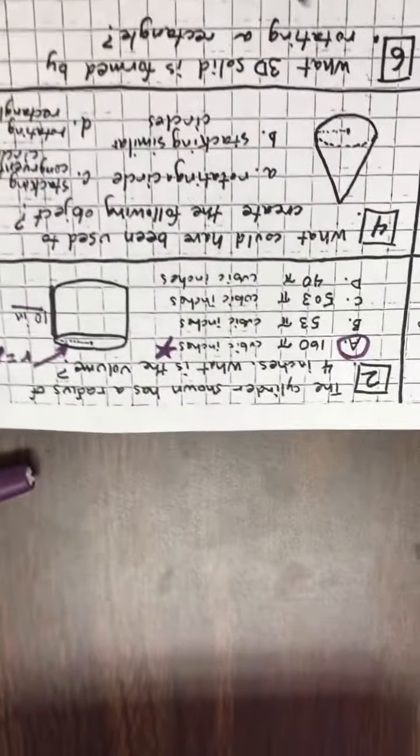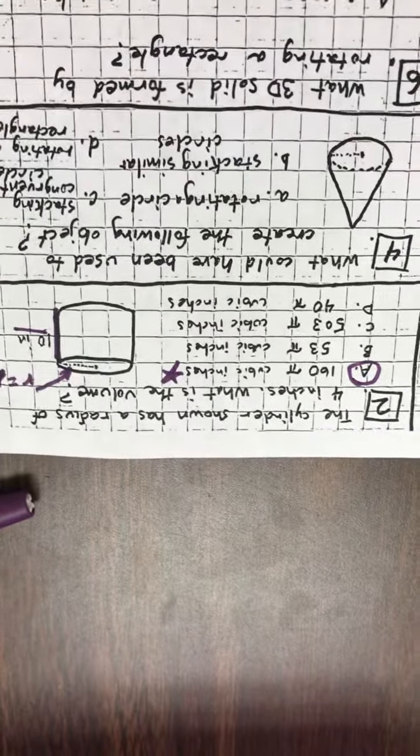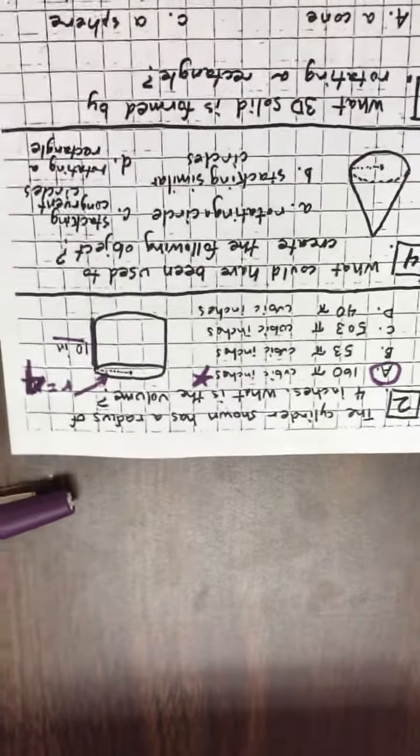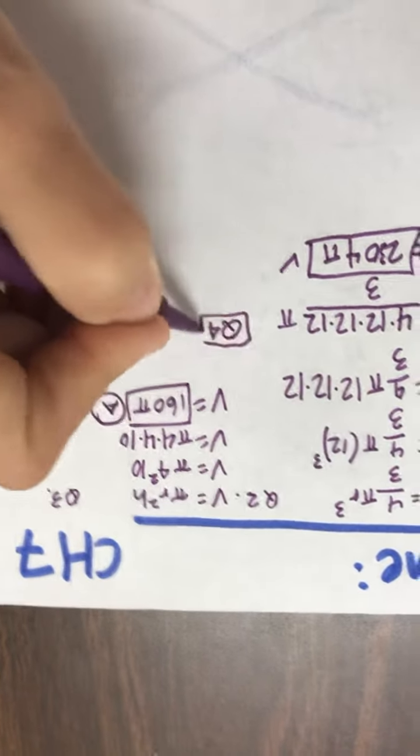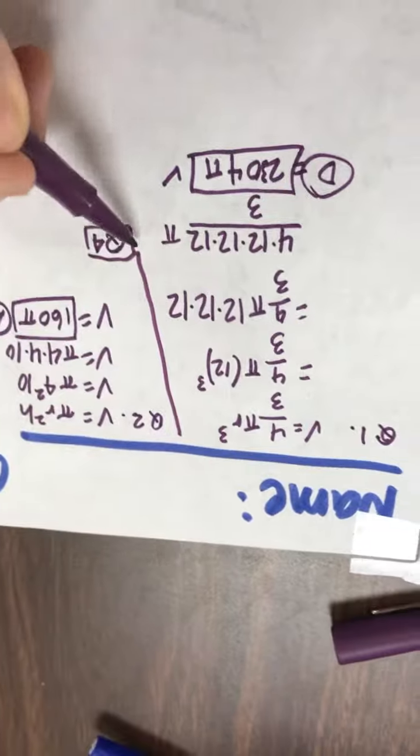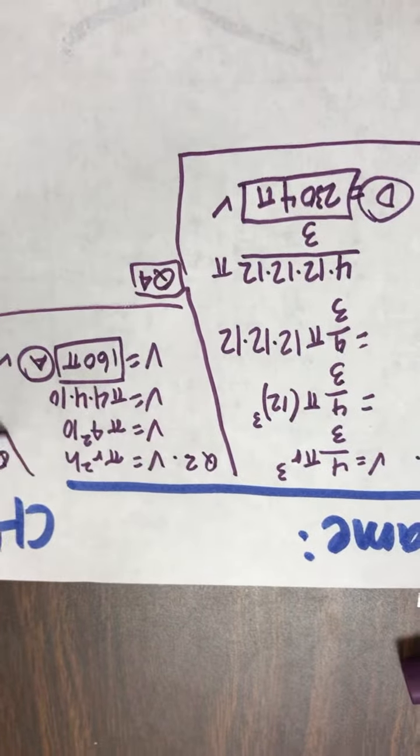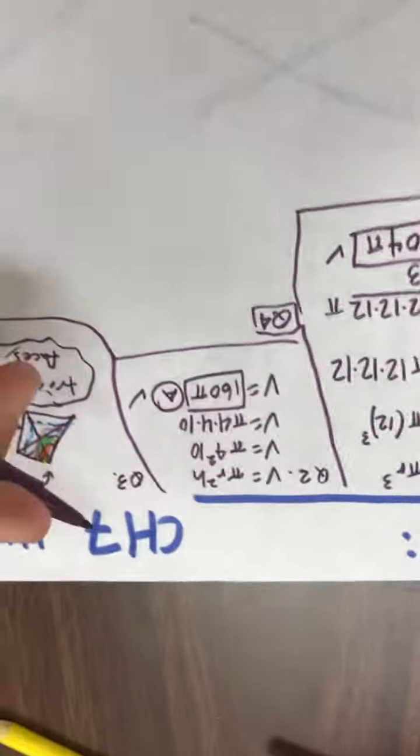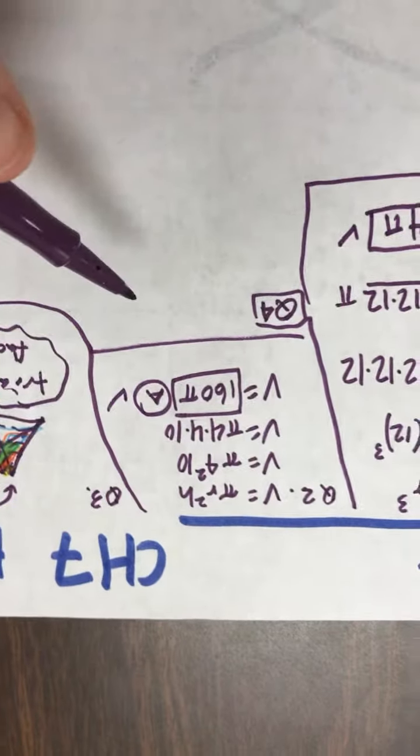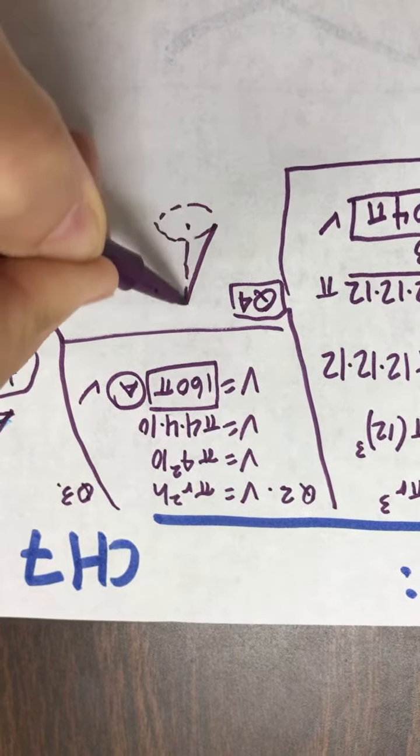Four. What could have been used to create the following objects? Okay. So there's a variety of answers here. I'm going to go over here to my notes. So four. I'm just going to get organized here a little bit. So I have question one, question two, question three. Looking good. So question four says, what could be used to create this object?